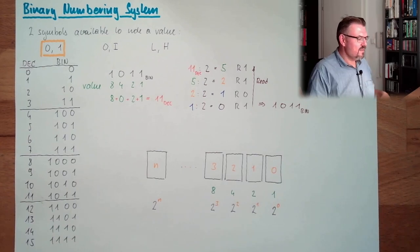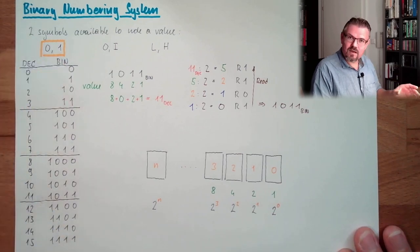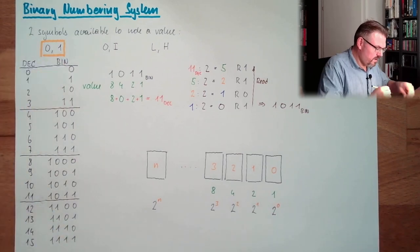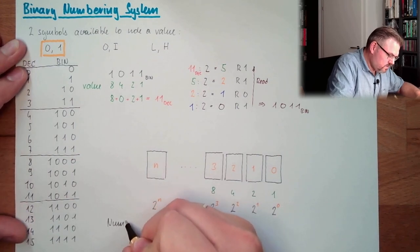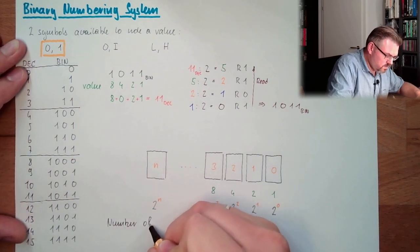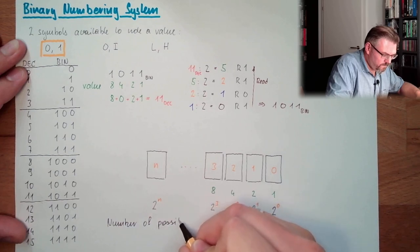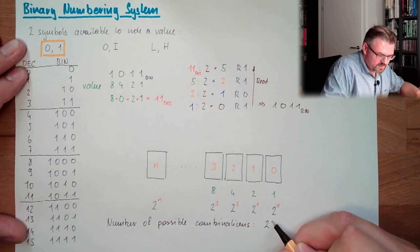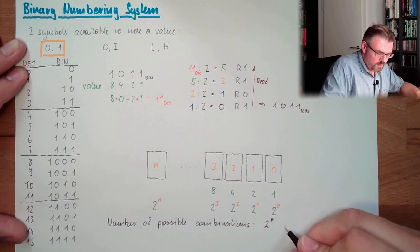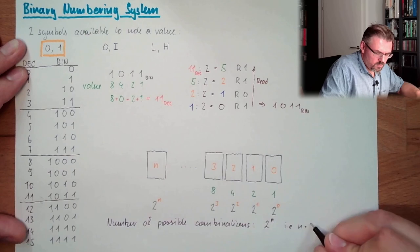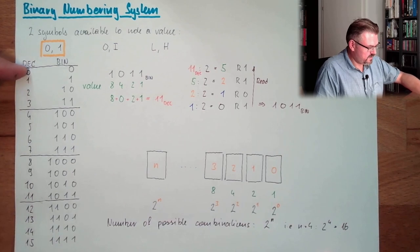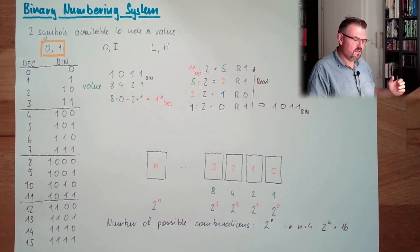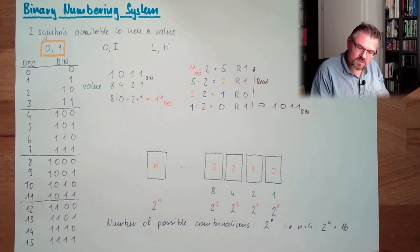16. This 16 is how many different combinations are there, 2 raised by the power of 4, number of combinations. It's exactly the same in the decimal system. Then this 2 is not 2, it's 10, 10 raised by the power. If I have 3 digits, I can have 1,000, 10 raised by 3, 1,000 different combinations.